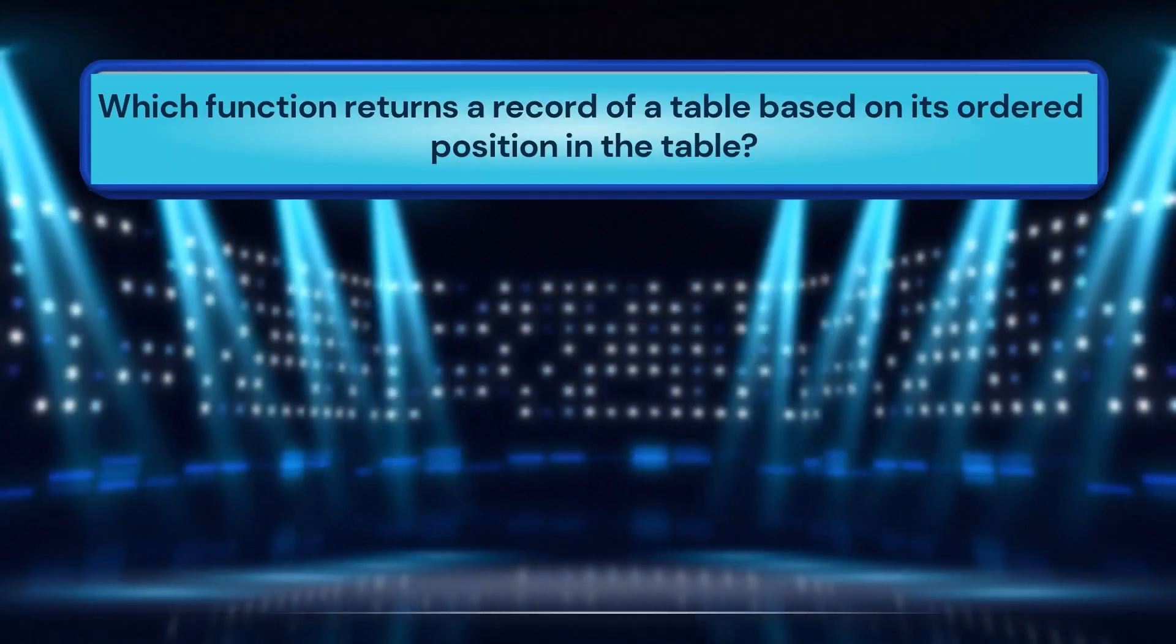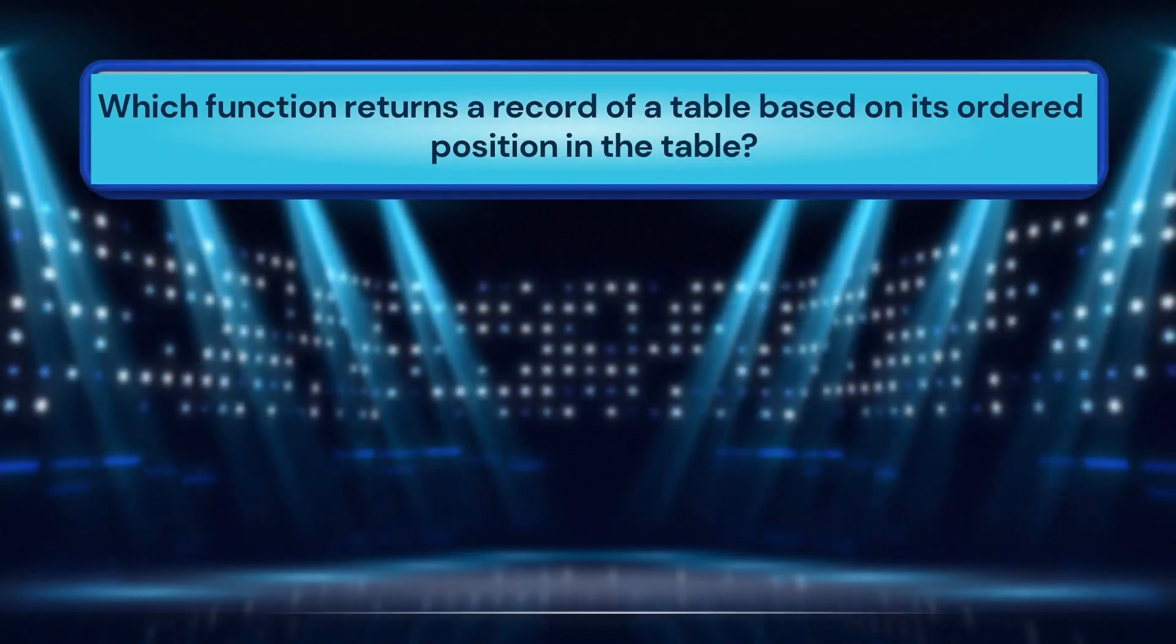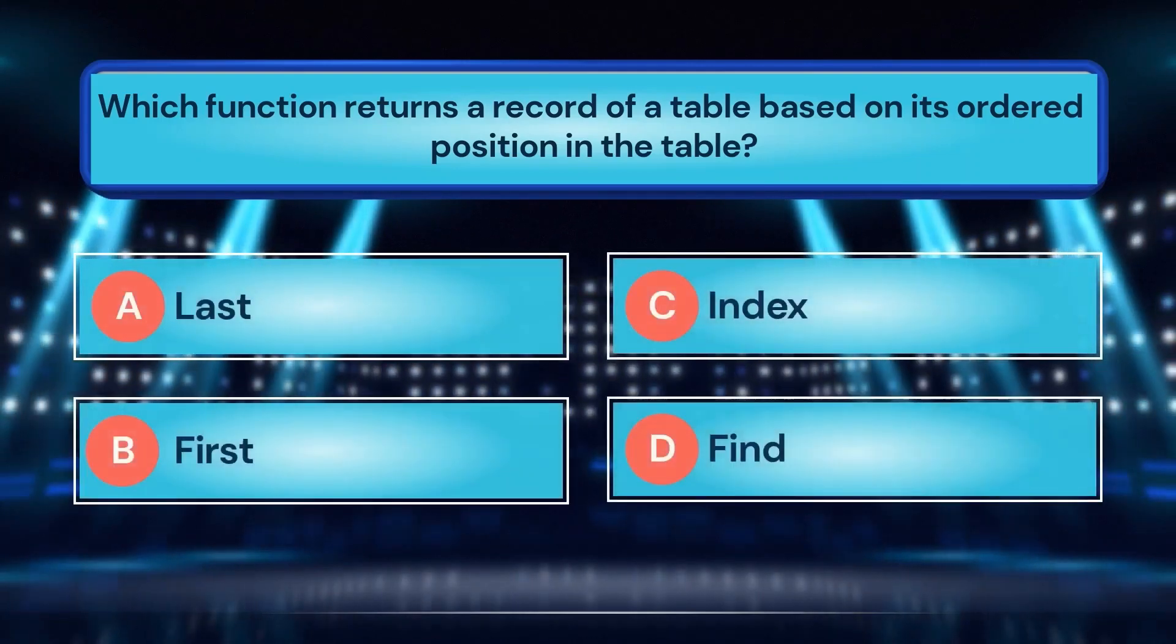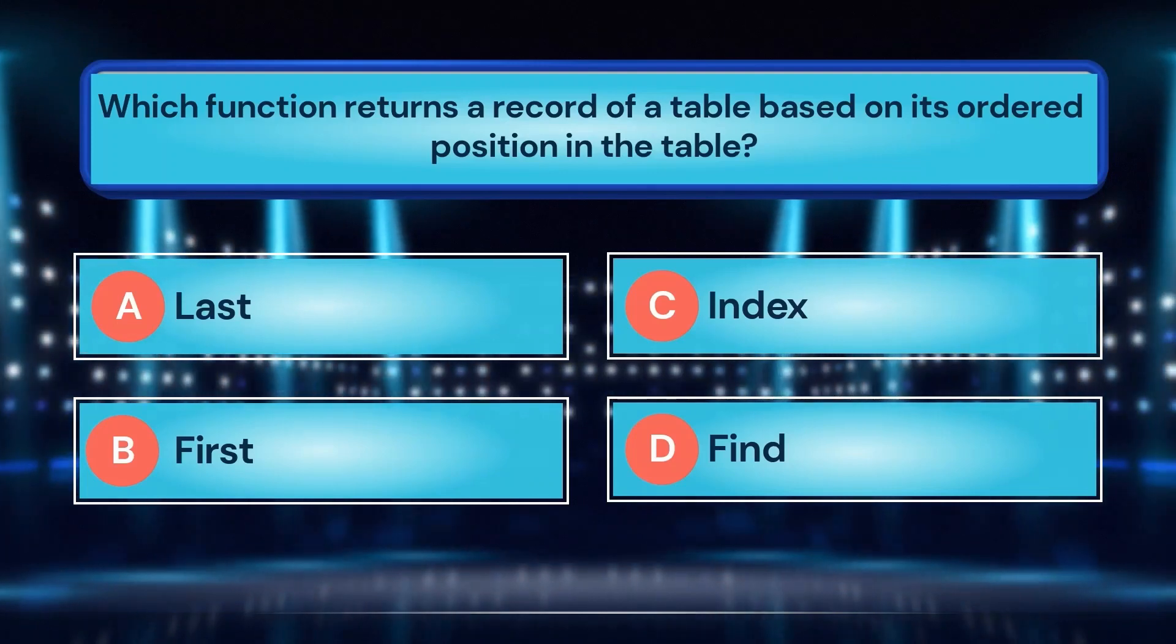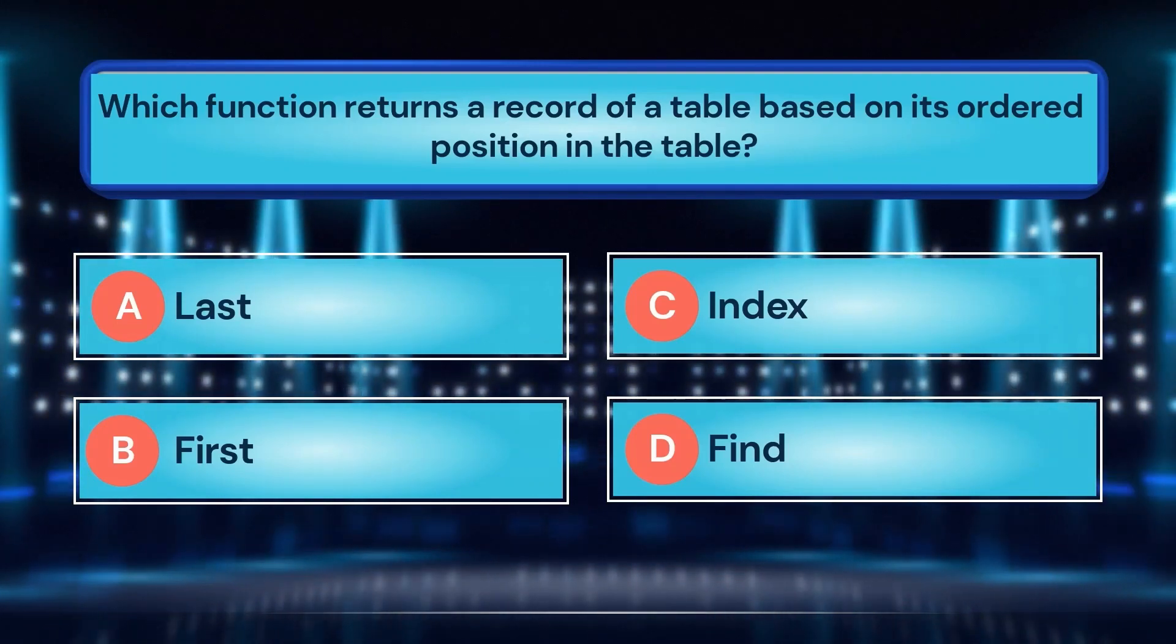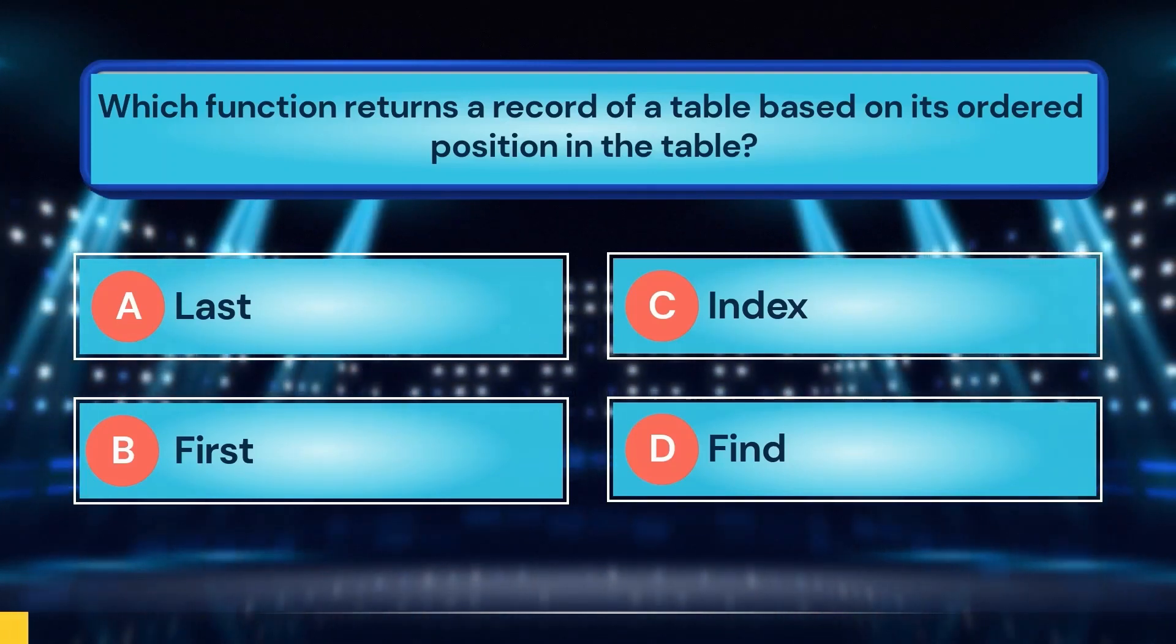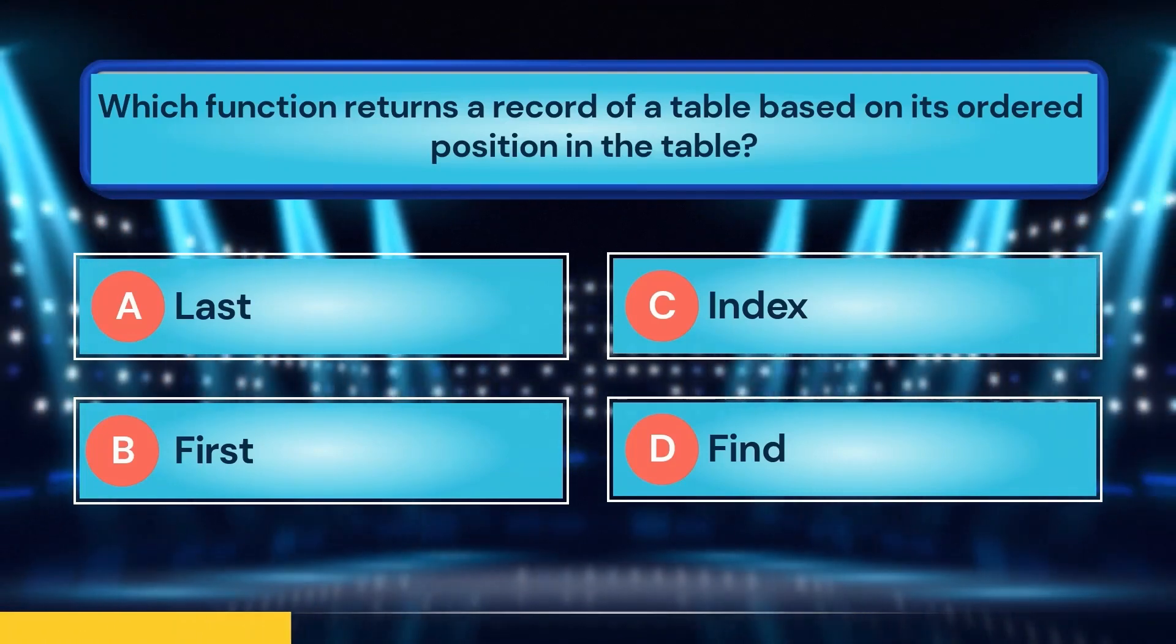Which function returns a record of a table based on its ordered position in the table? A. Last. B. First. C. Index. D. Find.